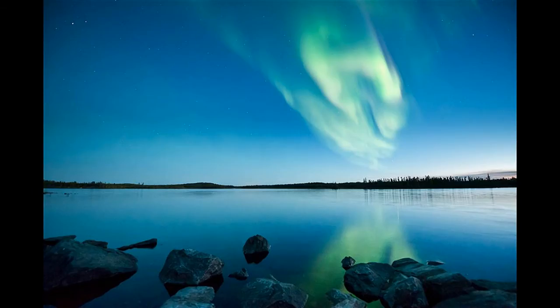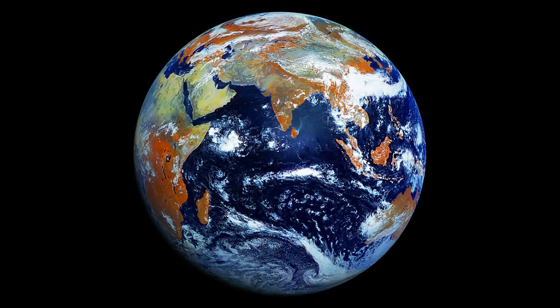And God said, Let the earth bring forth grass, the herb yielding seed, and the fruit tree yielding fruit after his kind. And the earth brought forth grass, and herb yielding seed after his kind, and the tree yielding fruit, whose seed was in itself after his kind.